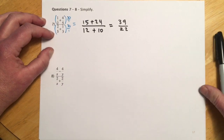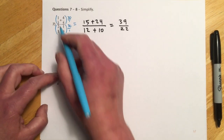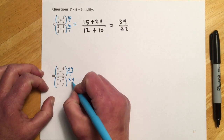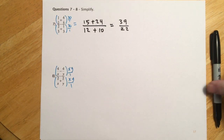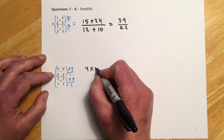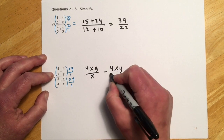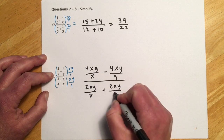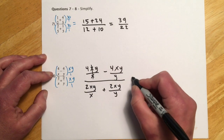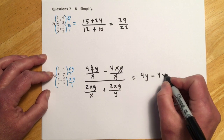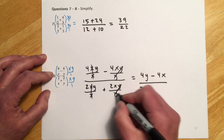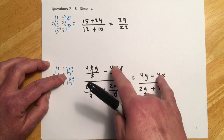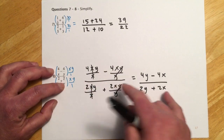Here the LCD is XY — same as with 2 and 5 you'd go 10; with X and Y you just multiply them together. Writing out the canceling step: X's drop out, leaving 4Y; Y's drop out, leaving minus 4X; X cancels, leaving 2Y; Y cancels, leaving plus 2X. The goal is to get from setup to result without writing all that intermediate work.